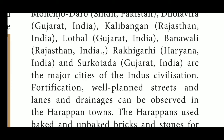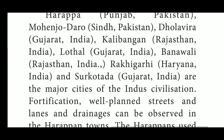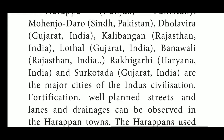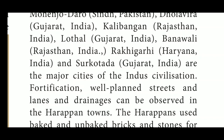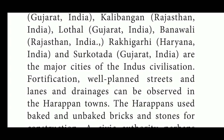The major cities of the Indus civilization are fortified cities. All of the cities had fortifications, well-planned streets and lanes, and drainage systems visible in Harappan towns. The Harappans used both baked and unbaked bricks for construction. It is an urban, not a rural, civilization. All houses and buildings were constructed using baked and unbaked bricks.